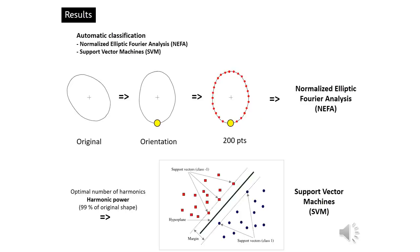The third analysis aimed at creating automatic classification. The goal was to create a classification model capable of automatically deciding which technique was used for vessel fabrication based on the overall shape of the section. All outlines were oriented on the first principal component axis and the starting point was set to the minimum y-coordinate point. Based on this, 200 equidistant points were traced along the outline. These points were then treated by normalized elliptic Fourier analysis, which decomposes the outline into an infinite series of repeating trigonometric functions called harmonics. The greater the number of harmonics, the better the reconstruction of the original contour. The optimal number of harmonics was estimated by harmonic power, keeping harmonics representing at least 99% of the original shape of the sections.